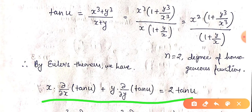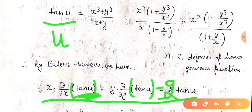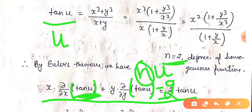Applying Euler's theorem to tan(u): x times ∂(tan u)/∂x plus y times ∂(tan u)/∂y equals 2 times tan(u), since the degree of homogeneity is 2.